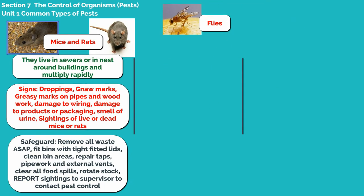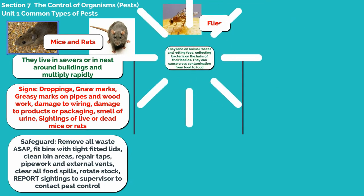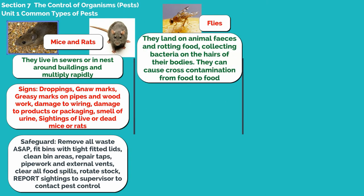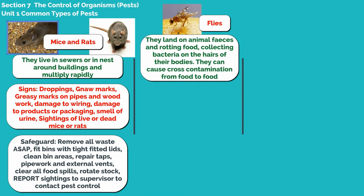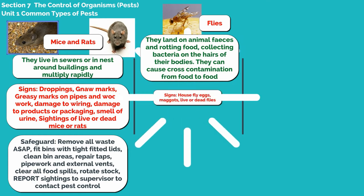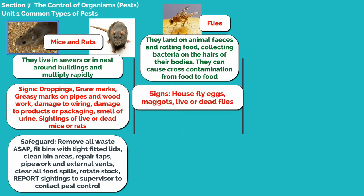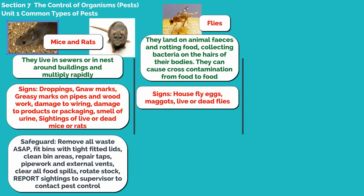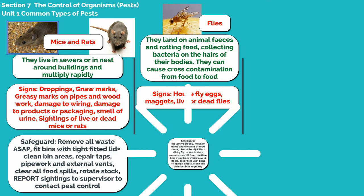Flies land on animal faeces and rotting food, collecting bacteria on the hairs of their bodies. They can cause cross-contamination from food to food. The signs of them are house fly eggs, maggots, and live or dead flies.